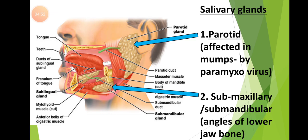The parotid glands are present below the pinna on the inner surfaces of the cheek. These parotid glands are the glands majorly affected in mumps, caused by a virus called paramyxovirus.